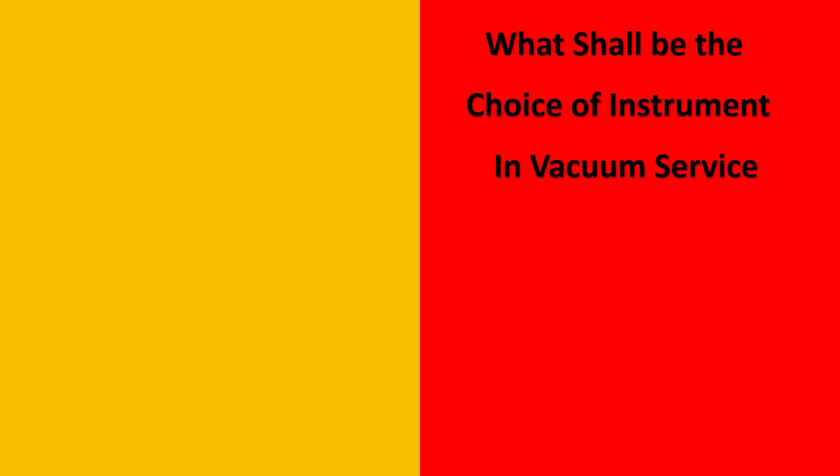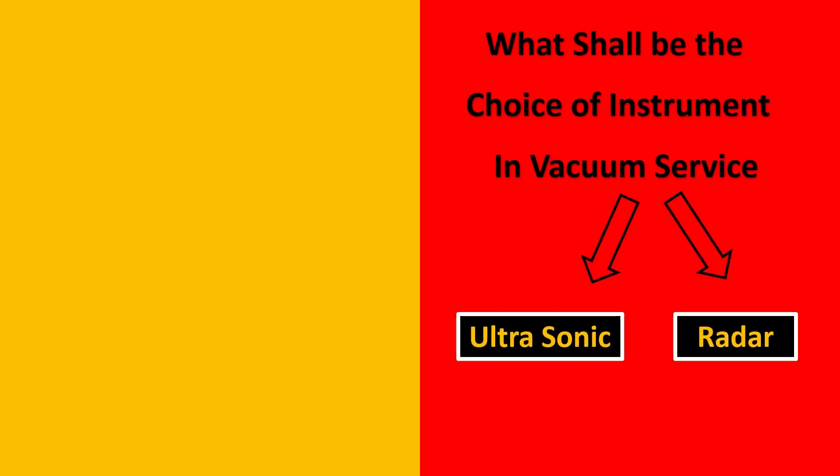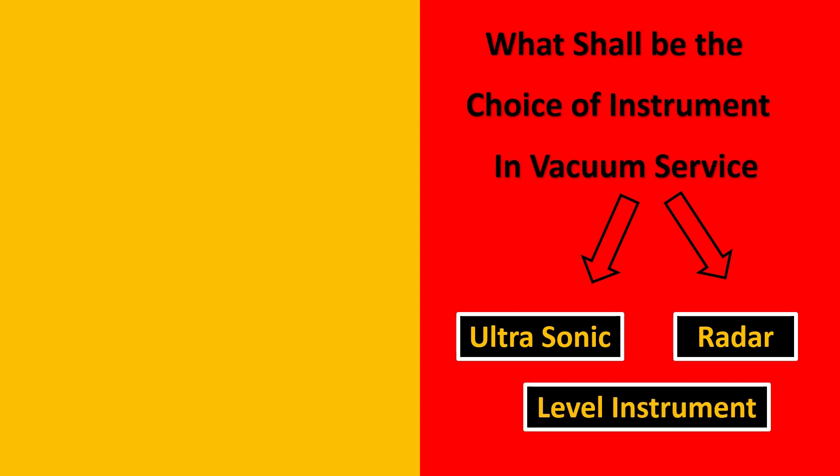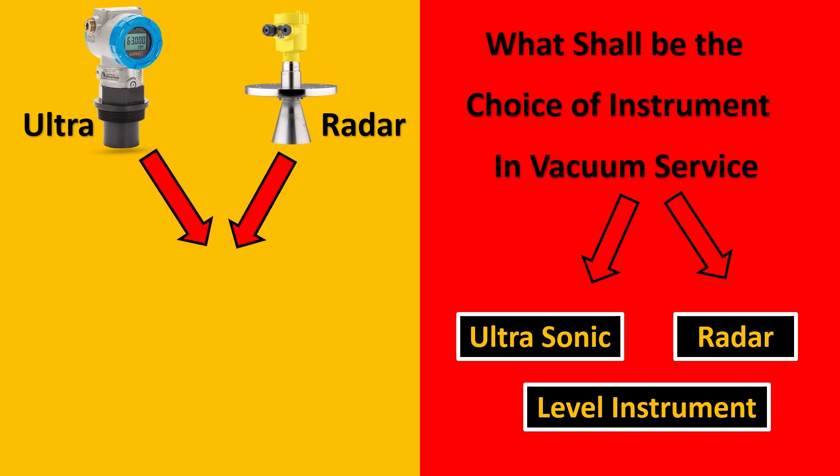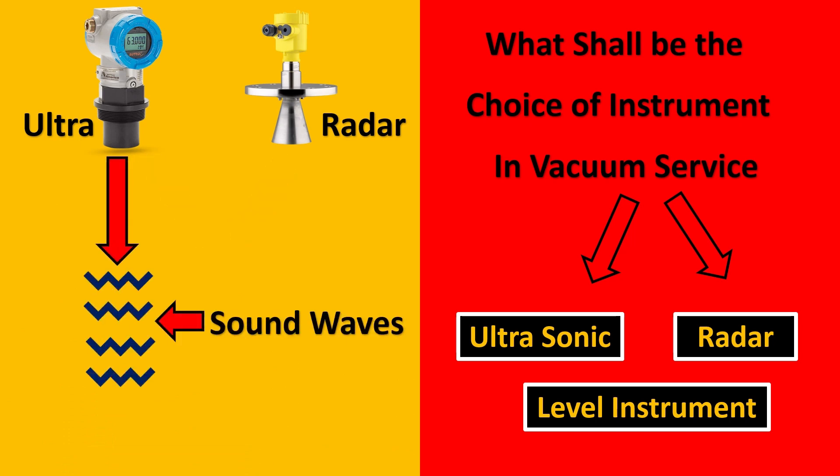Now the next question which is asked is what shall be the choice of instrument in vacuum service for measuring level? Will you go for ultrasonic or radar instrument? But and why is this the case? The answer is yes, both of these are amazing instruments. They use their waves to transfer and find out the level. But ultrasonic especially uses sound waves. And we all know that sound waves cannot travel in vacuum. Thus, our choice for vacuum services would be radar and not ultrasonic.